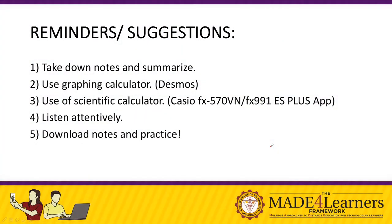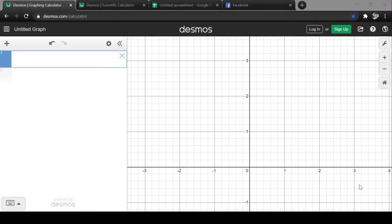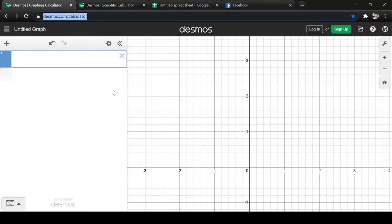Some reminders before we start. Take down notes and summarize. Next, we are going to use graphing calculator. I'll be using Desmos. For our graphing calculator, in your mobile app, you can actually download this. Just type Desmos graphing calculator and it will appear. Or if you're using your personal computers or laptops, you can go to this site, desmos.com/calculator.